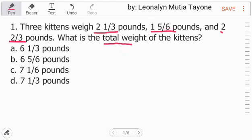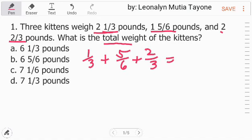Itong 2 and 2 thirds pounds, 2 and 1 third, and 1 and 1 sixth. Unahin natin i-add - kasi mixed numbers ito, addition. So, unahin natin i-add itong mga fractions. Kung mag-add tayo ng fraction, dapat yung denominator natin ay pareho. So, in-convert natin na pareho yung denominator by finding the least common denominator. And the least common denominator here is 6.